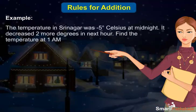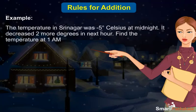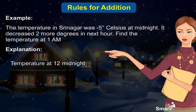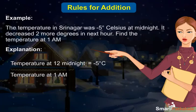Example: The temperature in Srinagar was minus 5 degrees Celsius at midnight. It decreased 2 more degrees in the next hour. Find the temperature at 1 am. The temperature at midnight is minus 5 degrees Celsius. It decreased 2 more degrees, so the temperature is the addition of minus 5 and minus 2, which is equal to minus 7 degrees Celsius.